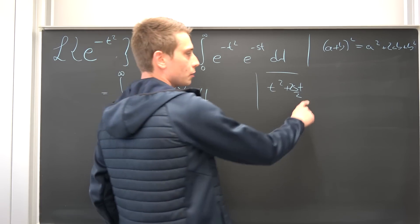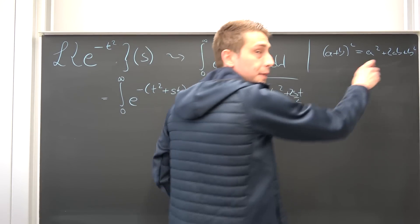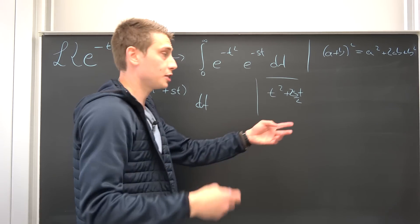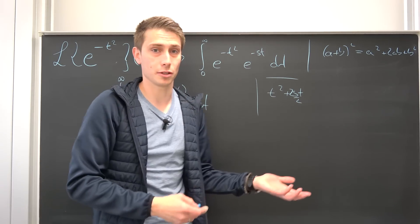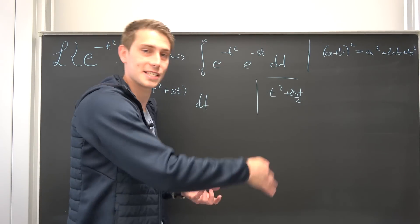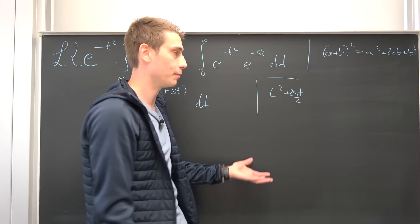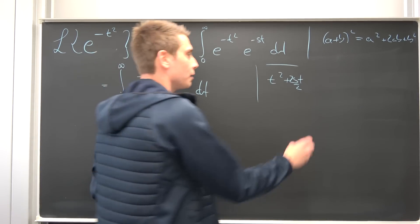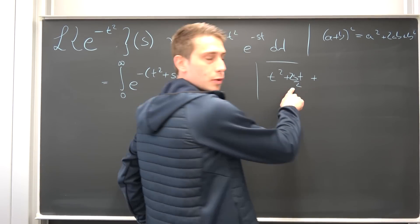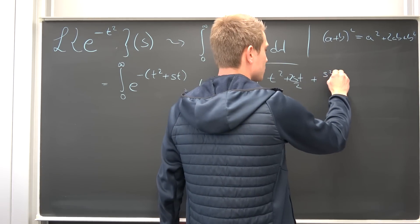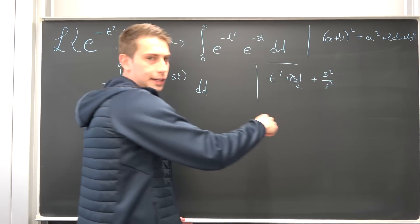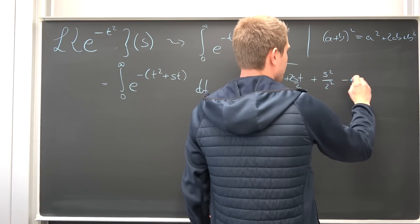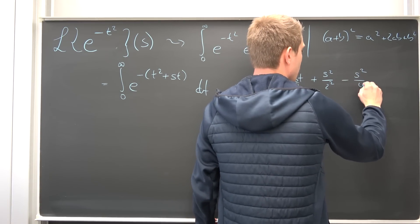So meaning, if we interpret our s times t as nothing but 2 times s over 2 times t, we actually get our factor of 2 right here, and we can identify our b as being nothing but s over 2. So the thing here right now is, we can just add our b squared to it. We can just add another 0 to it, because if you have one apple and you don't place another apple next to it, you still have only one apple. Meaning, we are going to add our b squared to it, which is nothing but s squared over 2 squared, and then we are going to subtract it right again. So this is s squared over 4.